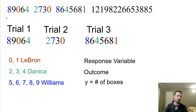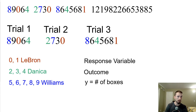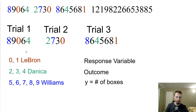Here we have our random integers: 8, 9, 0, 6, 4, 2, 7, 3, 0. The 8 gives us Williams, the 9 is another Williams — already had one. The 0 gives us LeBron, the 6 is another Williams, and the 4 gives us Danica. Now we have all three — Williams, LeBron, and Danica. That's trial number one, with a length of five. The second trial starts with 2 (Danica), 7 (Williams), 3 (another Danica), and 0 (LeBron) — length four. The third trial: 8 (Williams), 6 (Williams), 4 (Danica), then Williams, Williams, Williams, and finally LeBron — length seven.